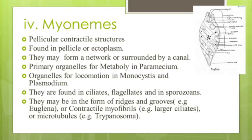The fourth locomotory organelle of Protozoa is myonemes. These are pellicular contractile structures found in the pellicle or ectoplasm. They may form a network or be surrounded by canals. They are primary organelles for metaboly in Paramecia and organelles for locomotion in Monocystis and Plasmodium. They are found in ciliates, flagellates, and sometimes in sporozoans. They may be in the form of ridges and grooves, as observed in Euglena. Sometimes contractile myofibril-type myonemes are found in the majority of ciliates, and sometimes they look like microtubules, as in Trypanosoma.